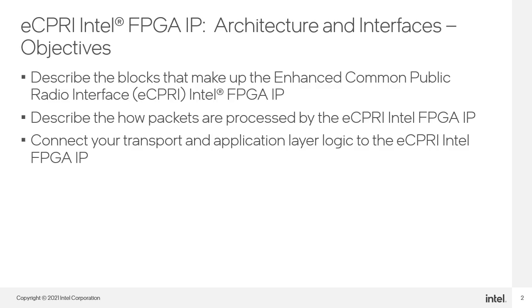By the end of this course, you will be able to describe the architecture and functional blocks that make up the eCPRI Intel FPGA IP. From there, you'll learn how packets are routed and processed by the IP core. Finally, you'll learn about the interfaces found on the IP core that you will use to connect your own transport and application layer logic.